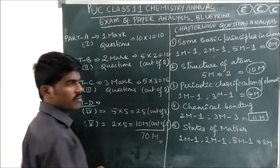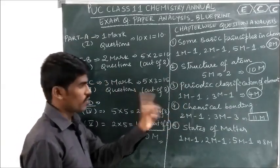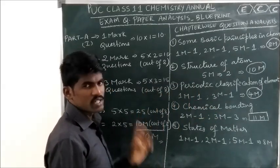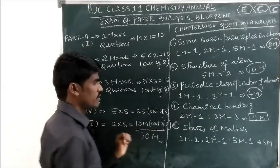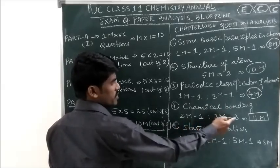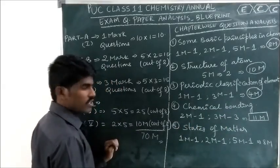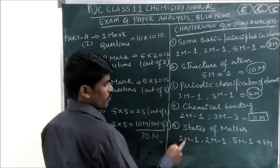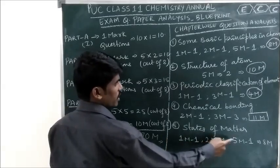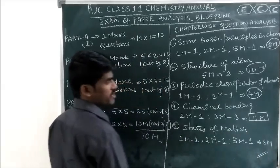Periodic Classification of Elements gives 1 one-mark question and 1 three-mark question. Total weightage is 4 marks. Chemical Bonding gives 1 two-mark question and 3 three-mark questions. Total weightage is 11 marks. States of Matter gives 1 one-mark question, 1 two-mark question, and 1 five-mark question. Total weightage is 8 marks.